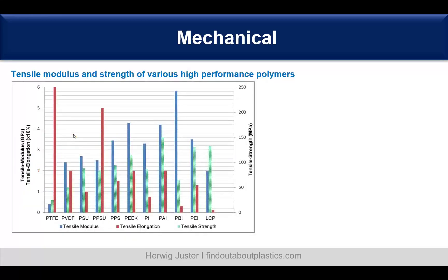Here is a comparison of tensile modulus and strength of various high performance polymers, including fluoropolymers, sulfones, PPS, polyamides, and LCP — with the modulus in blue, elongation in red, and tensile strength in green. You can see that PTFE has a very large tensile elongation but lower tensile strength. PPI has a high tensile modulus but low tensile elongation. Depending on your requirements, you can compare these properties across different temperatures and use this information for material selection.